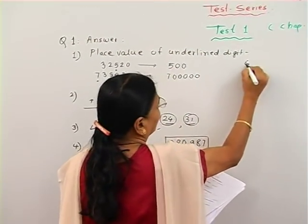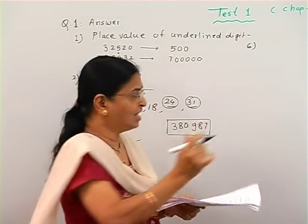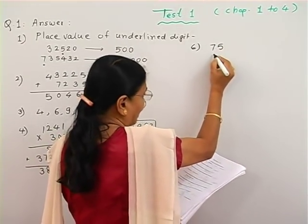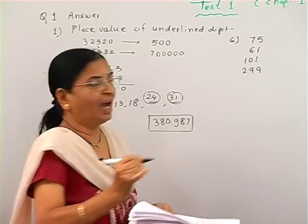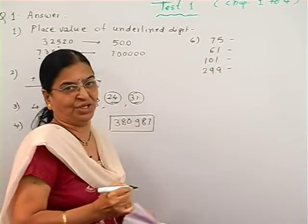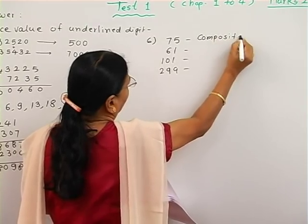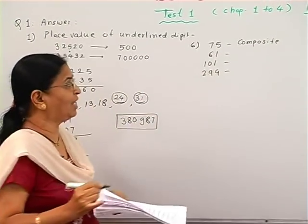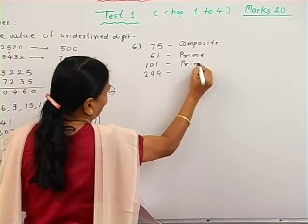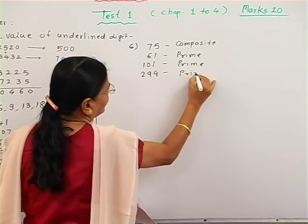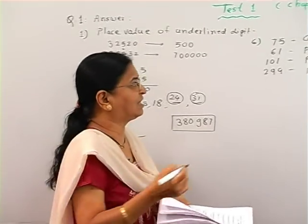Now the sixth one — state whether the following numbers are composite or prime. Write the numbers 75, 61, 101, 299. 75 is divisible by 5, so it is a composite number. 61 is not divisible by any number, so it is prime. 101 is also prime. And 299 is also prime — we can check by dividing by 2, 3, 5, 10, or other numbers.